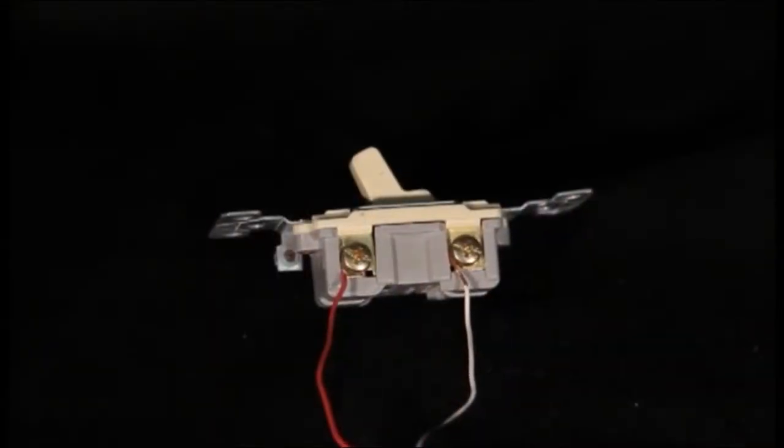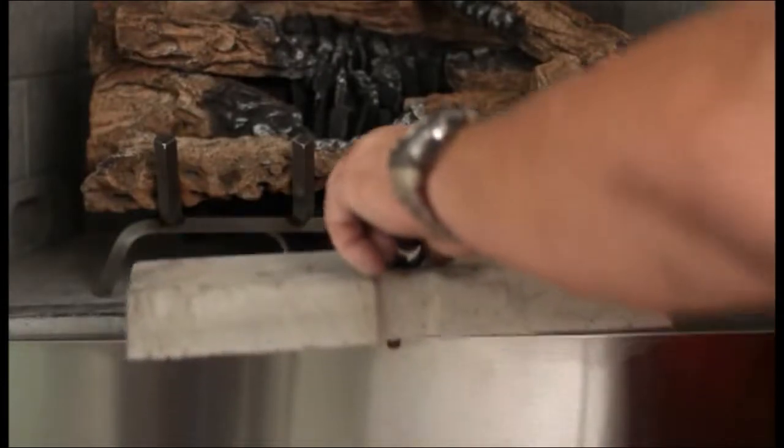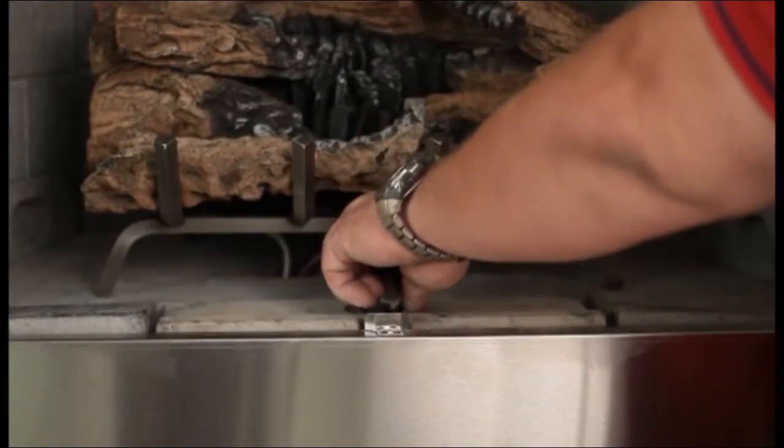Connect the two wires to the two terminals of the wall switch. Reinstall front access brick by placing in hole.